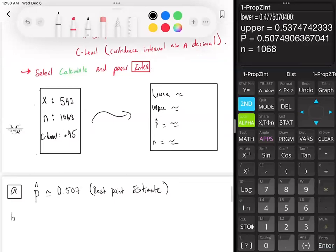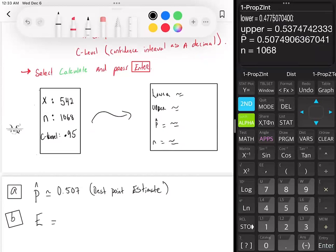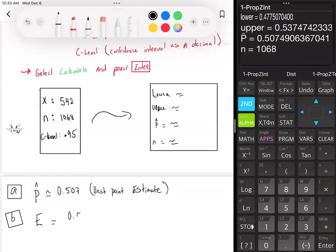Now for part B, the margin of error, when we're doing this on the calculator, we take the upper bound minus the lower bound, and then we divide that by 2. So for the upper bound, if you round the second value that shows up on your screen here to three decimal places, the upper limit would be 0.537. And the lower bound rounded to three decimal places would be 0.478.